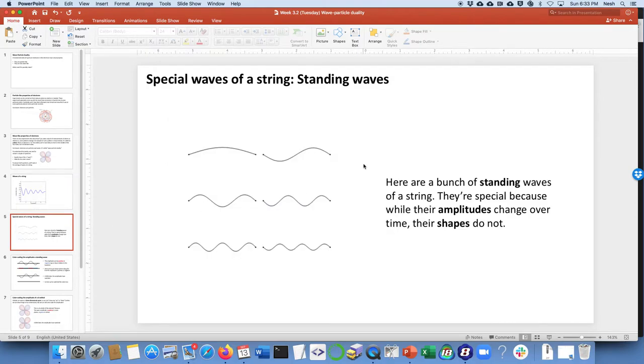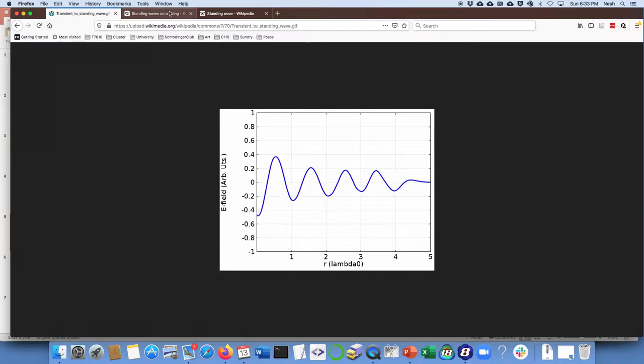There's a special category of waves on a string. If you're a string player, you might know about this. They're called standing waves, and they are special because although their amplitudes change over time, their shapes do not. Let me kind of explain a little bit about what I mean by that.